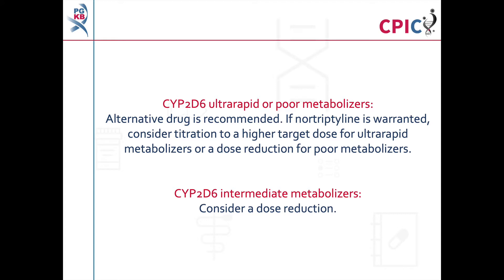The guideline recommends an alternative drug for patients who are CYP2D6 ultra-rapid or poor metabolisers. If nortriptyline is warranted, a dose reduction can be considered for patients who are CYP2D6 poor metabolisers. A dose reduction can also be considered for patients who are CYP2D6 intermediate metabolisers.